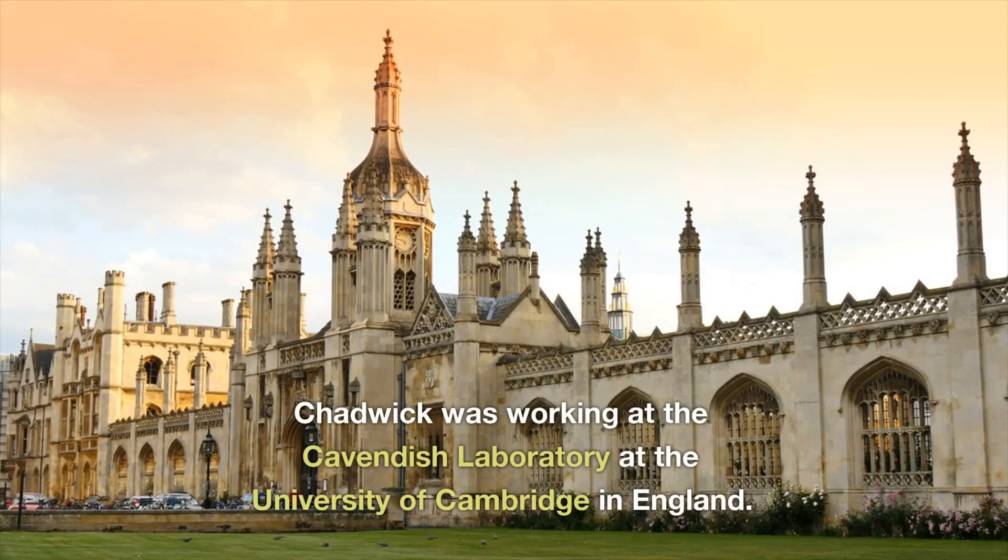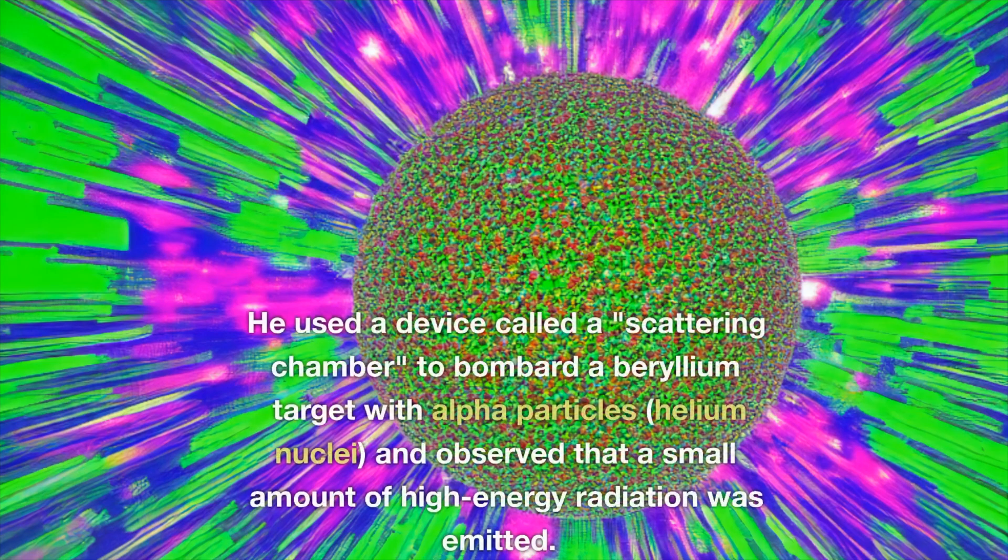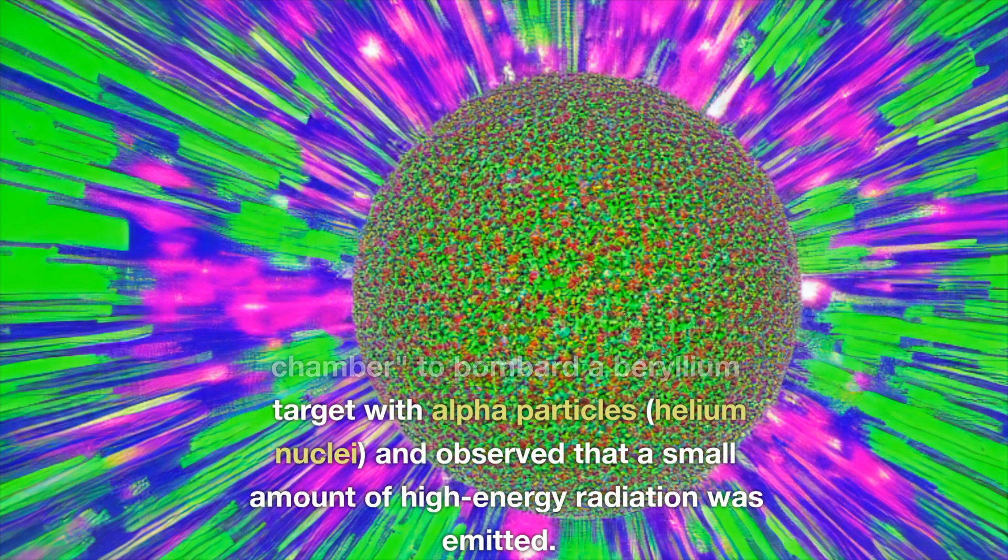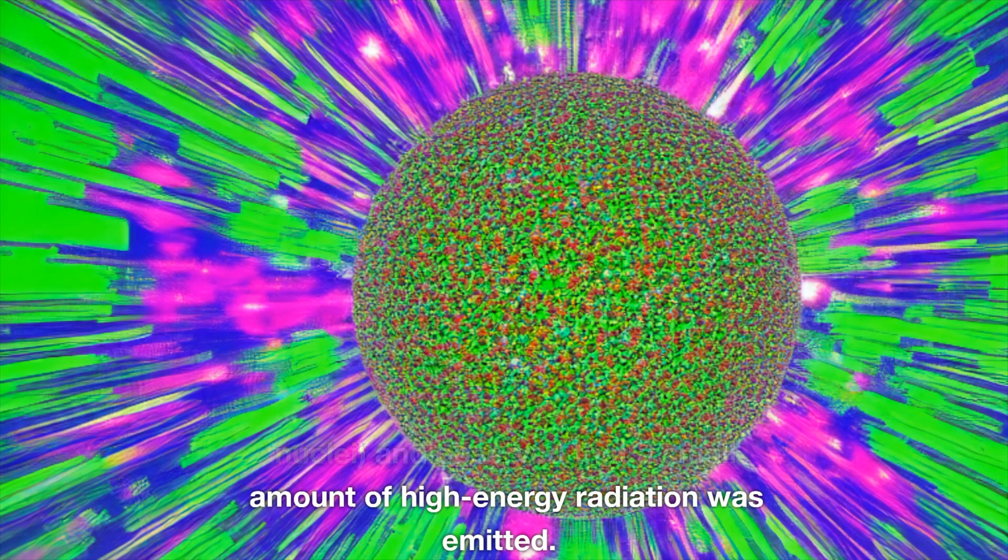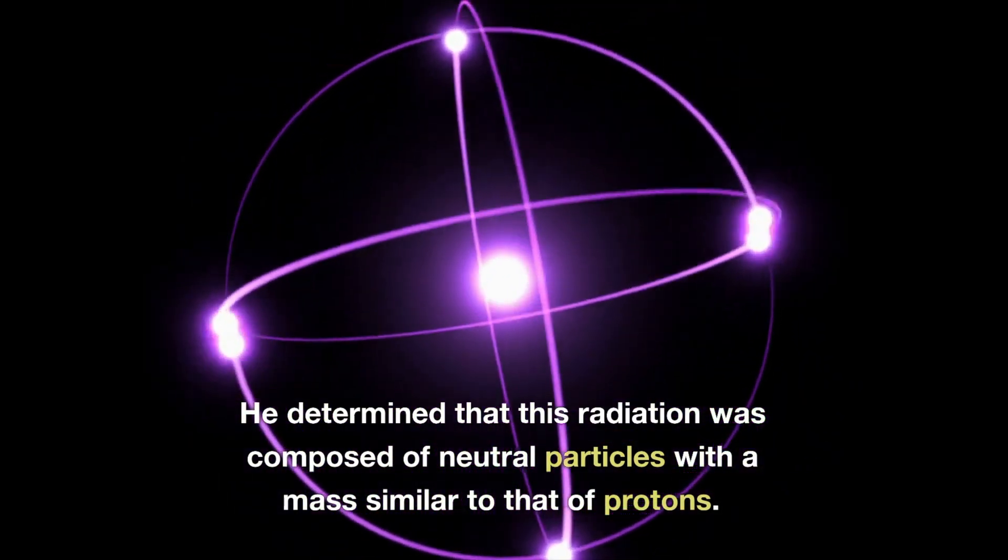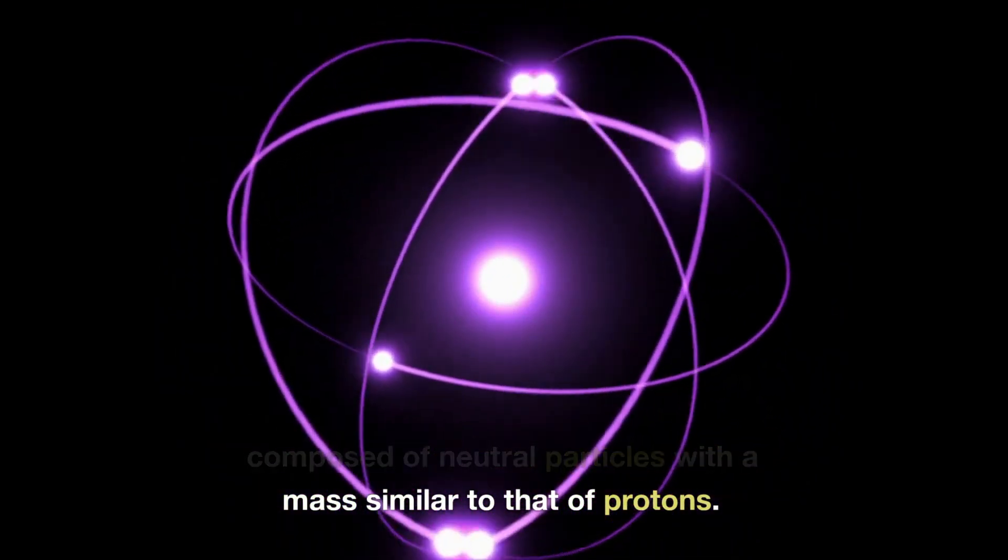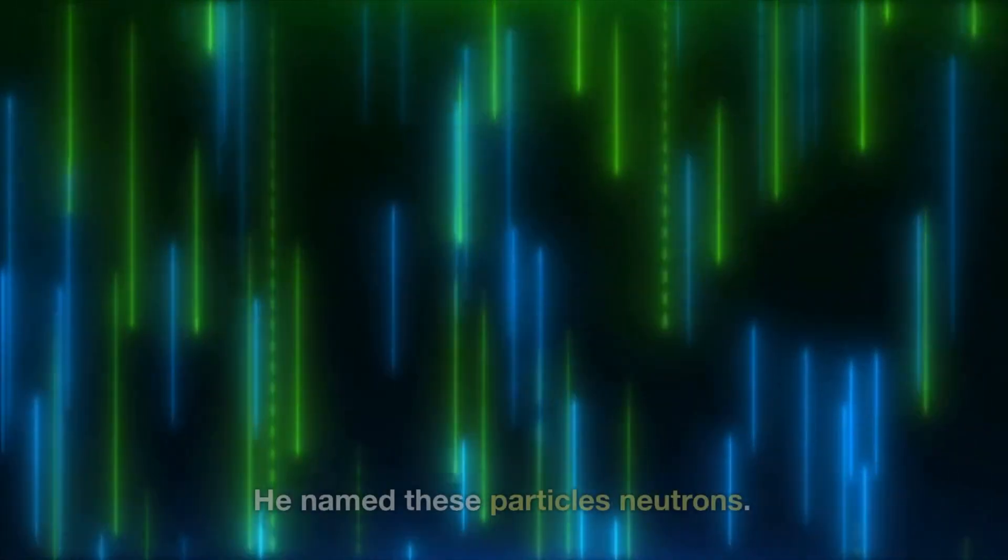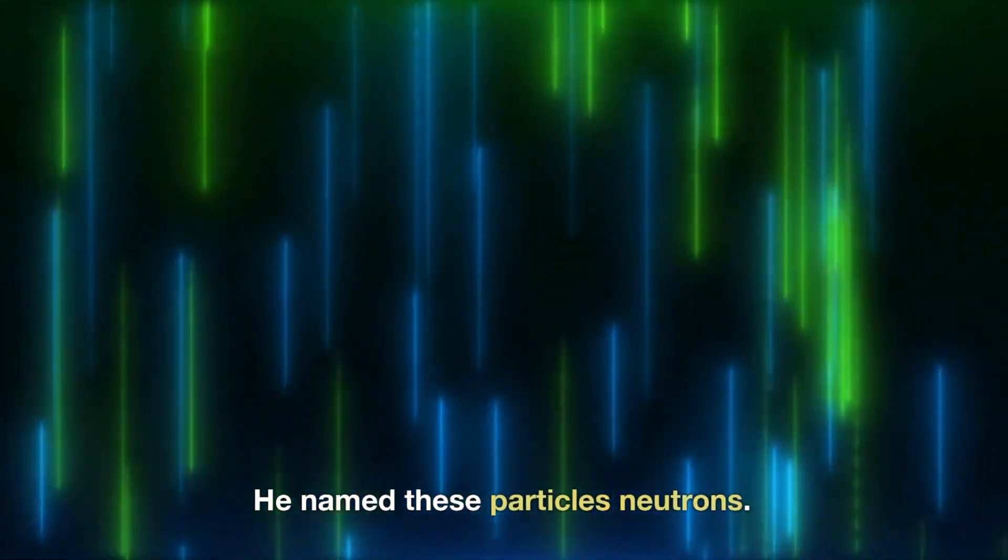Chadwick was working at the Cavendish Laboratory at the University of Cambridge in England. He used a device called a scattering chamber to bombard a beryllium target with alpha particles, helium nuclei, and observed that a small amount of high-energy radiation was emitted. He determined that this radiation was composed of neutral particles with a mass similar to that of protons. He named these particles neutrons.